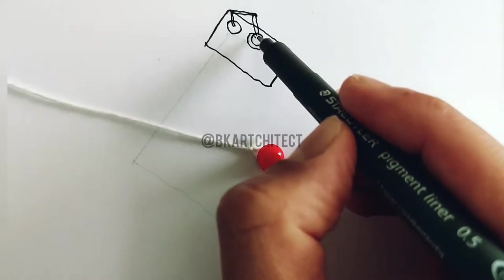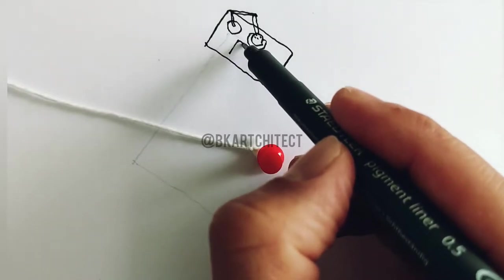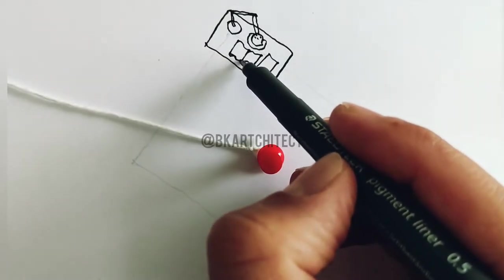Now you can draw all the details that you want on top of the table. You see me here drawing a lamp, then a book, then an open book, and you can draw whatever you want.